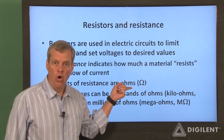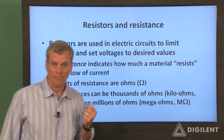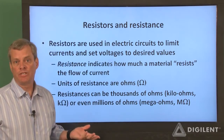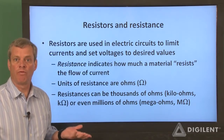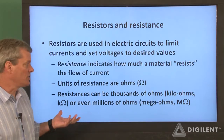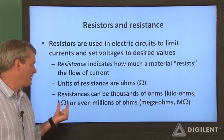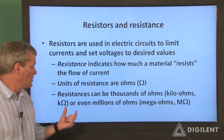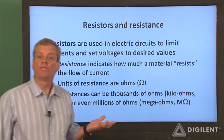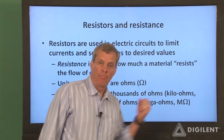Resistance has units of ohms, represented by the Greek letter omega. Resistances of the resistors in the Digilent analog parts kit range from ohms to thousands of ohms, called kilo-ohms and represented by a K prefix, to millions of ohms, called mega-ohms, represented by an M prefix.